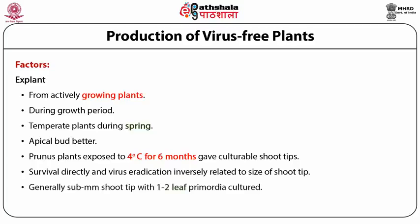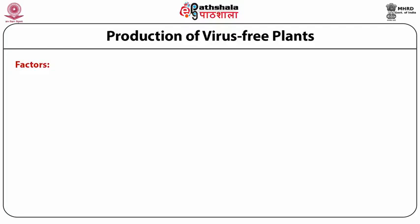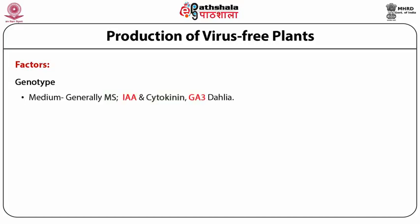If you take a larger shoot tip, it may survive better but the chances of virus eradication reduce. Therefore, generally a sub-millimeter shoot tip carrying the meristem and one to two leaf primordia is cultured. Meristem alone has been attempted to eradicate viruses, but it is not a practical explant. As in all other tissue culture cases, the genotype of the donor plant always plays an important role. Normally MS medium supplemented with IAA and cytokinin has been used.